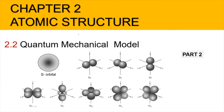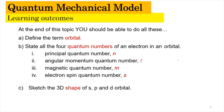Hi, Assalamualaikum and a very good morning. We are now in Chapter 2, Atomic Structure, focusing on sub-topic 2.2 Quantum Mechanical Model, Part 2 of the video. In this video, we're going to learn how to sketch the 3D shape of the S, P, and D orbitals. For learning outcomes A and B, please refer to Part 1, the previous video, if you haven't watched it yet.